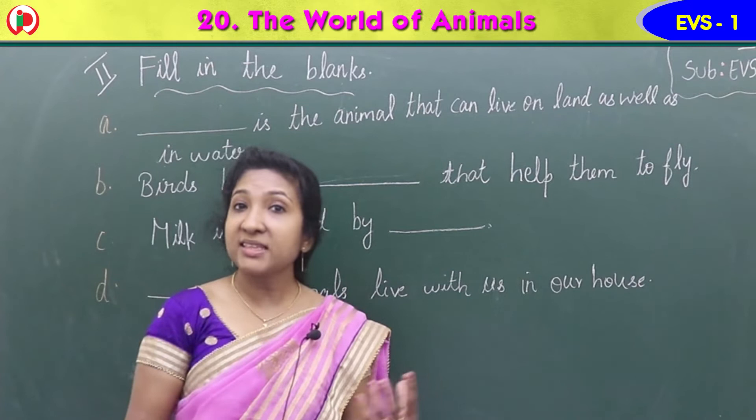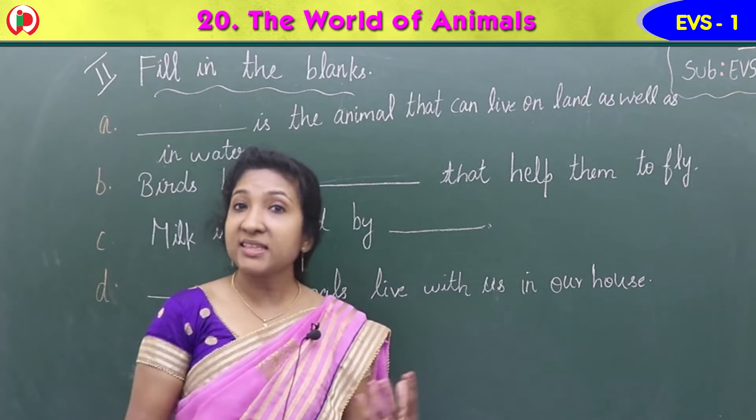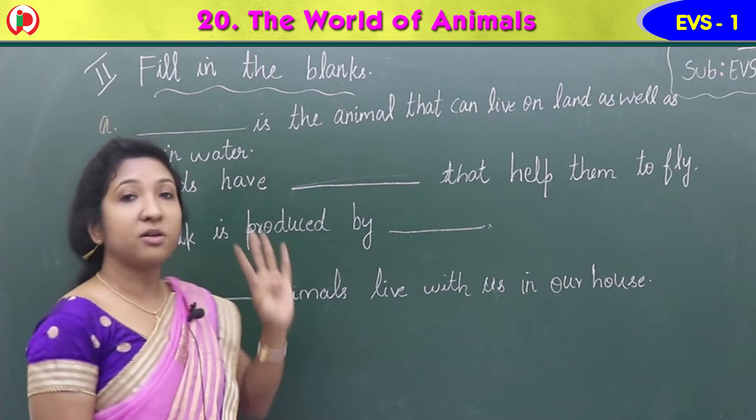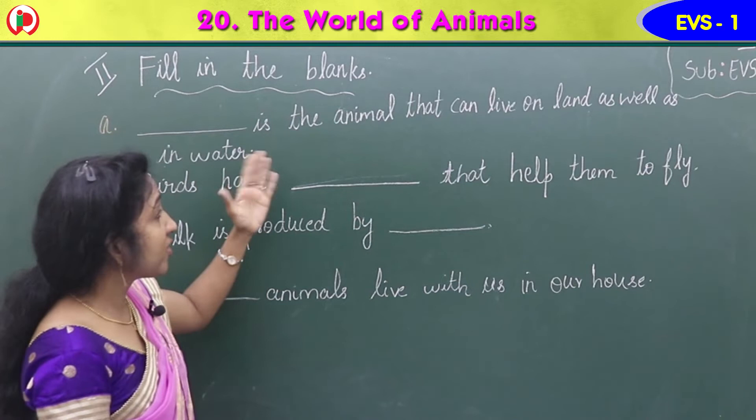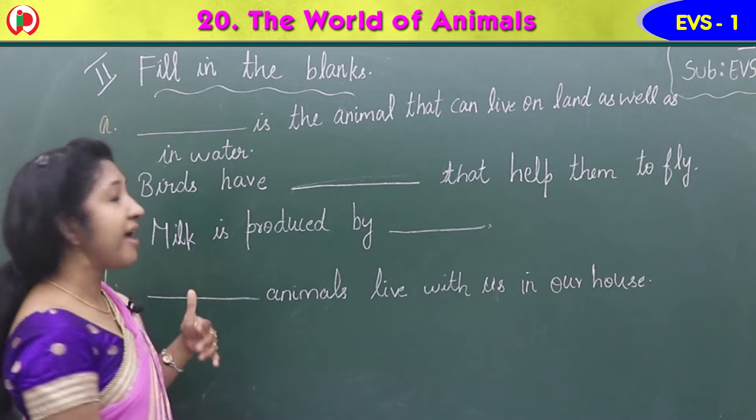Our next exercise in the workbook is Exercise 2: Fill in the blanks. There are four fill-in-the-blank questions: A, B, C, D. Read the questions carefully, think of the answer and write. Question A: dash is the animal that can live on land as well as in water.